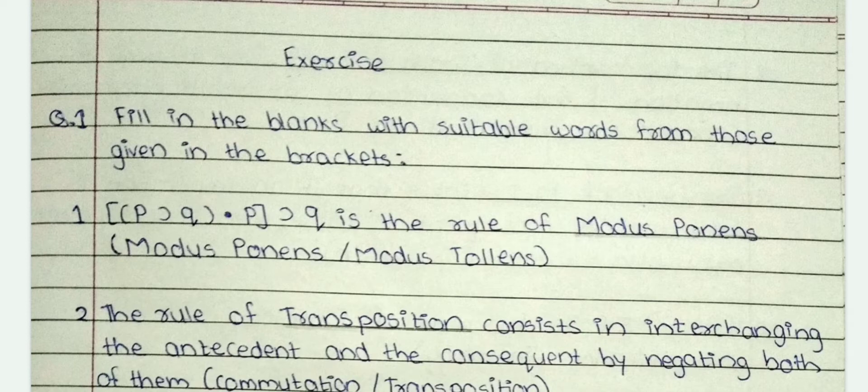Filling the blanks with suitable words from those given in the brackets. First: P horseshoe Q, P horseshoe Q is the rule of dash. The answer is modus ponens.